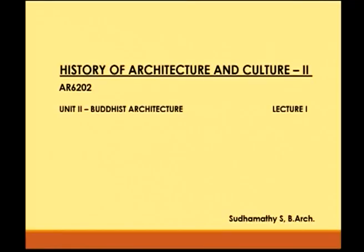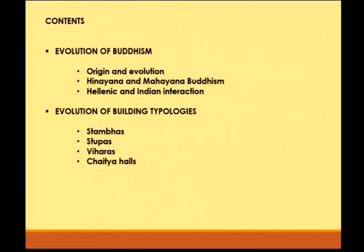Welcome to the UGC video lecture series. Today, we are seeing about History of Architecture and Culture 2, Unit 2: Buddhist Architecture, Lecture 1. The contents of the following lecture are: evolution of Buddhism, its origin and how it evolved in various phases; Hinayana and Mahayana Buddhism; Hellenic and Indian interaction; and evolution of various building typologies.